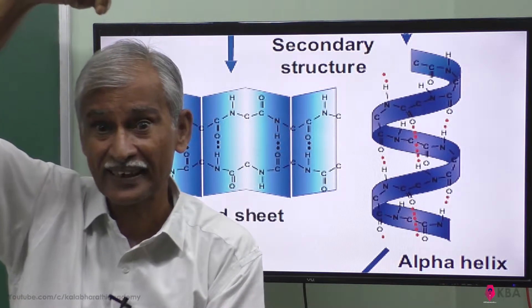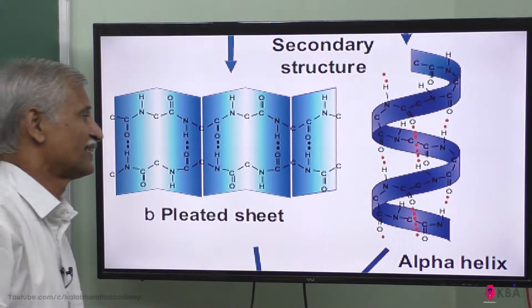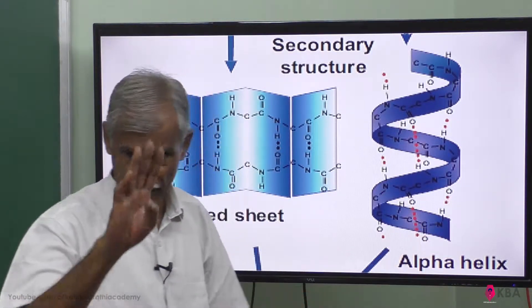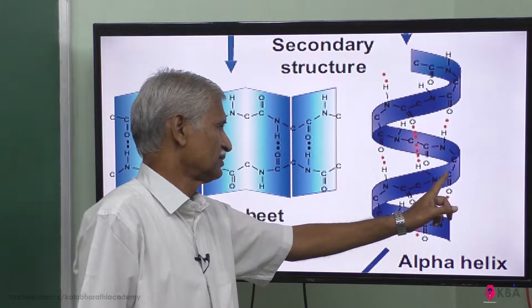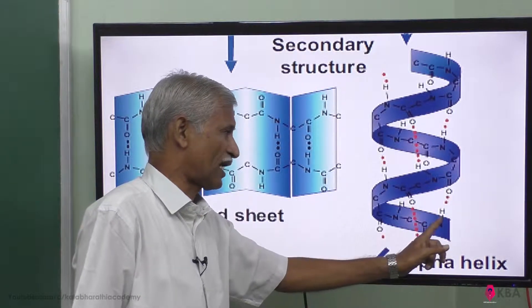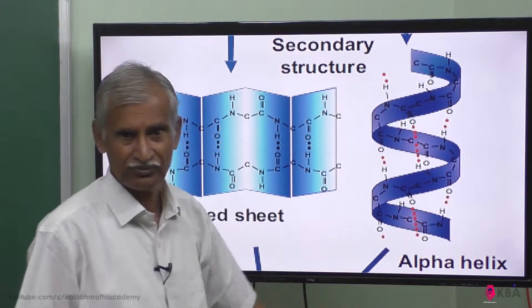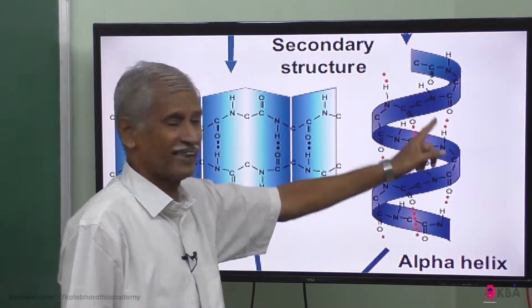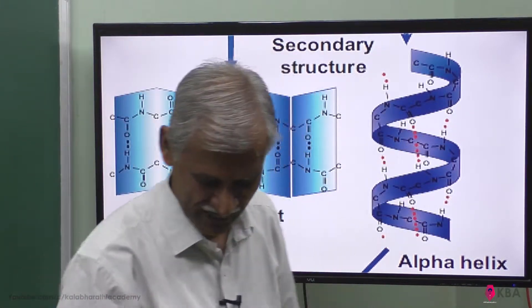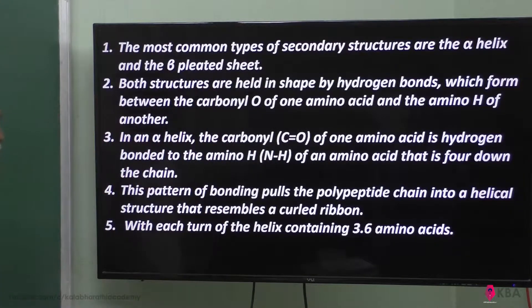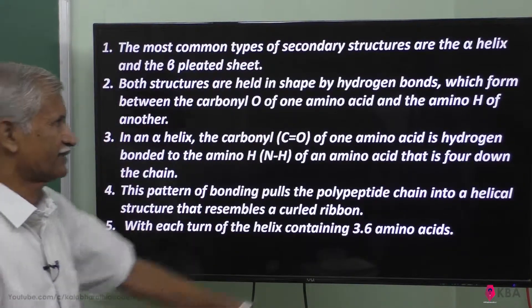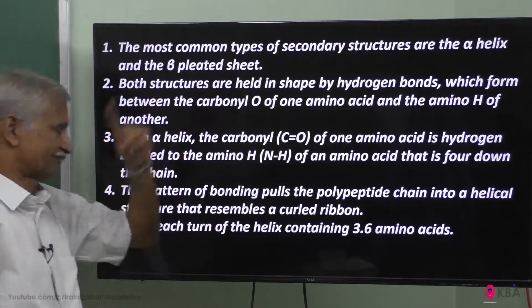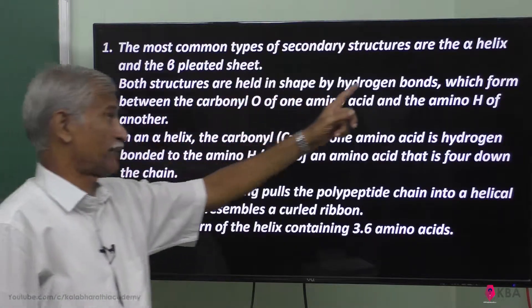But how is its helical structure maintained? Now, if you look at another amino acid, in a fourth amino acid, carbonyl oxygen, hydrogen, below the amine group, hydrogen is linked. This is called hydrogen bonding, and the bonding in the first place forms this helical structure. The most common type of secondary structure is alpha helical structure and a beta pleated sheet. Both the structures are held in shape by hydrogen bonds.